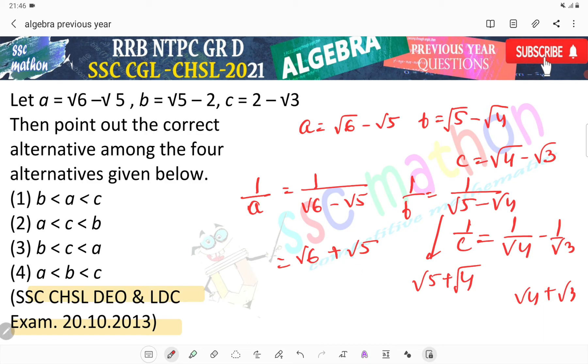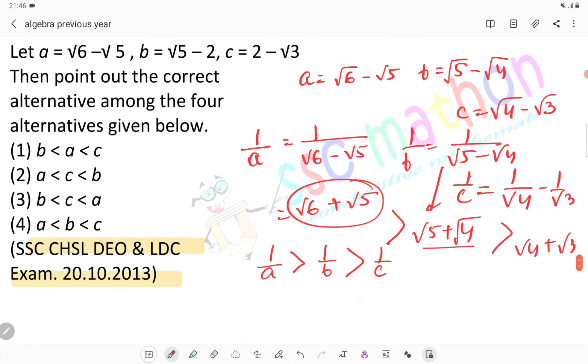1 by A, its value is the biggest. This is bigger, then this, then this. But if 1 by A greater than 1 by B greater than 1 by C, then we can say C greater than B greater than A. Option number 4 is the correct answer. Thank you, bye bye, stay tuned for the next class.